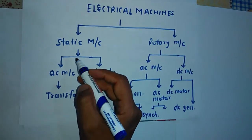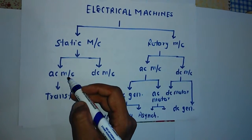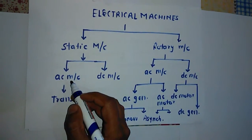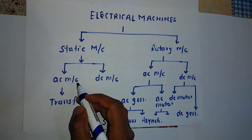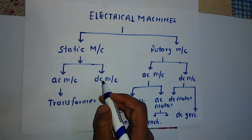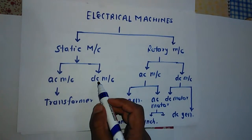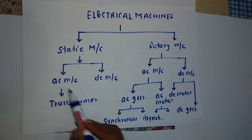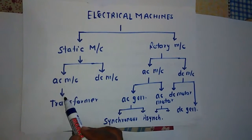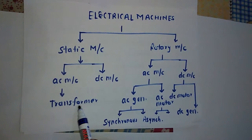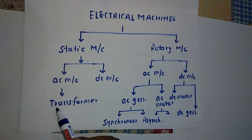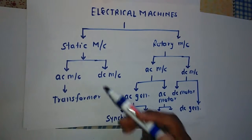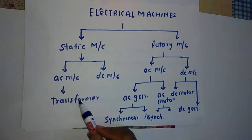Another classification of static machines are AC machines and DC machines. AC machines are those which are supplied by AC supply, and DC machines are those which are supplied by DC supply. AC machines have the classification of transformer, because a transformer is a static machine which has a stationary armature and stationary device.